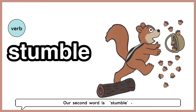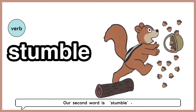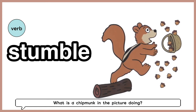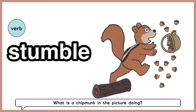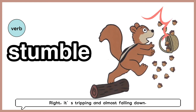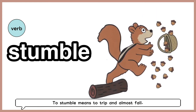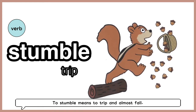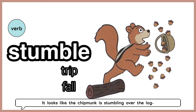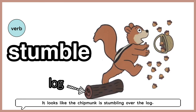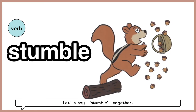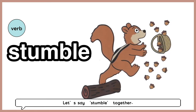Our second word is stumble. What is the chipmunk in the picture doing? It's tripping and almost falling down. To stumble means to trip and almost fall. It looks like the chipmunk is stumbling over the log. Let's say stumble together: stumble.